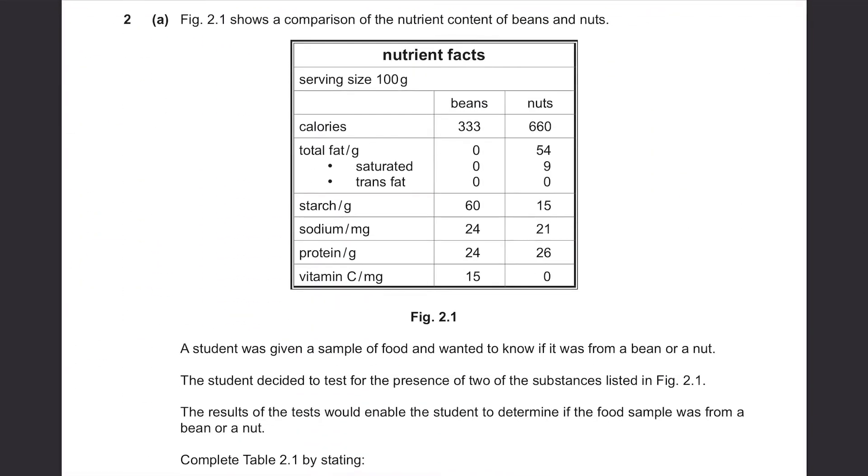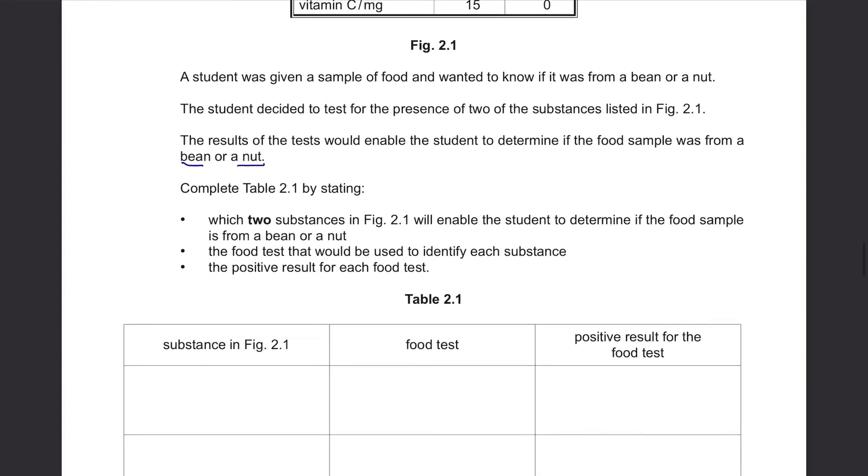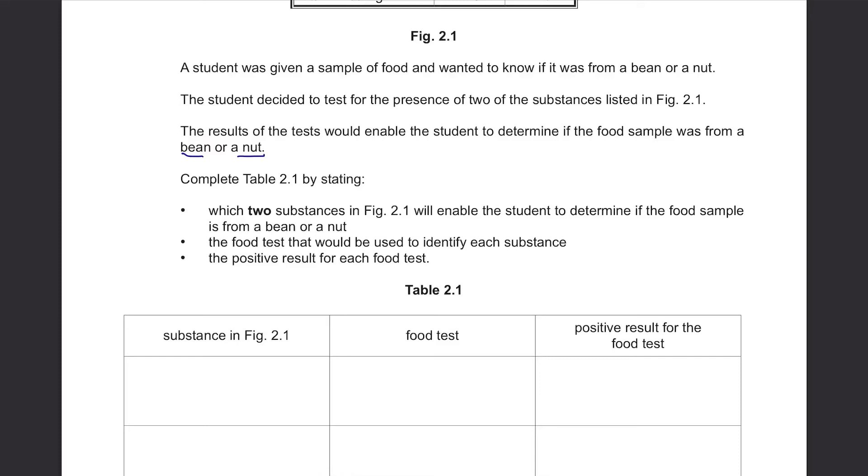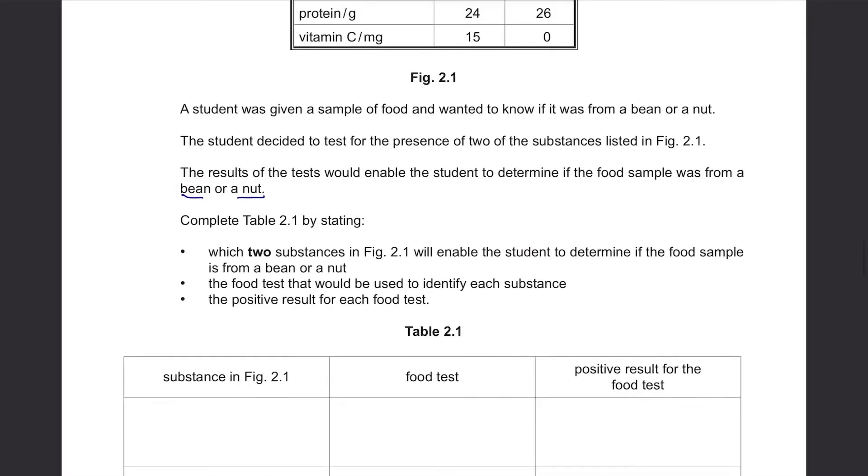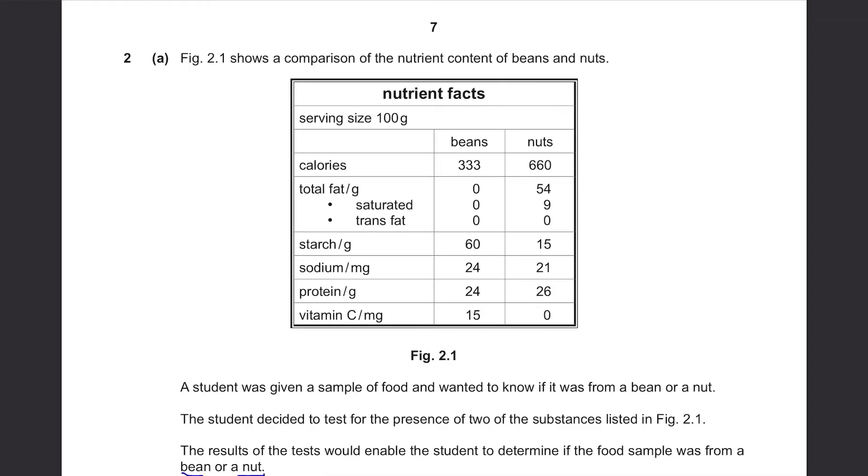Question 2, Part A. Figure 2.1 shows a comparison of the nutrient content of beans and nuts. A student was given a sample of food and wanted to know if it was from a bean or a nut. The student decided to test for the presence of two of the substances listed in Figure 2.1. The results of the tests would enable the student to determine if the food sample was from a bean or a nut. Complete Table 2.1 by stating which two substances in Figure 2.1 will enable the student to determine if the food sample is from a bean or a nut. Okay, don't worry. You're not supposed to know how to differentiate a bean and a nut. So, all you have to do is just compare the nutrient facts given here. Beans contain zero fat, but nuts have 54 grams of fat. And nuts contain zero vitamin C, but beans contain 50 milligrams of vitamin C. Which means that you can differentiate these two by comparing the fat and the vitamin C. And that's our answer.